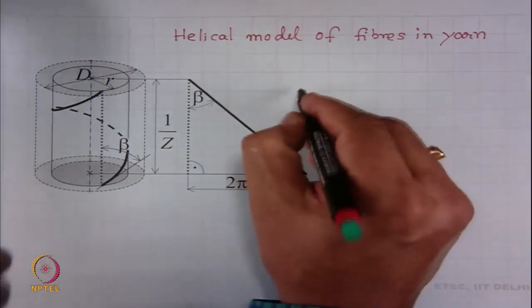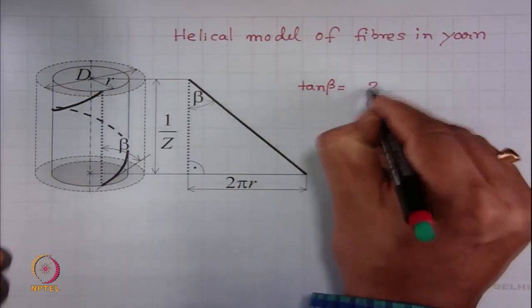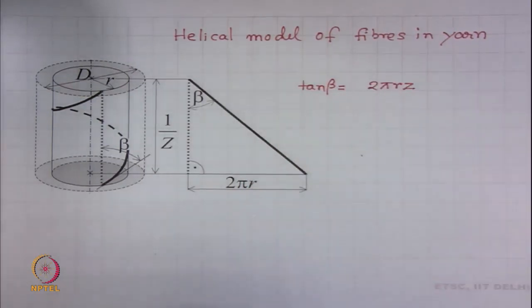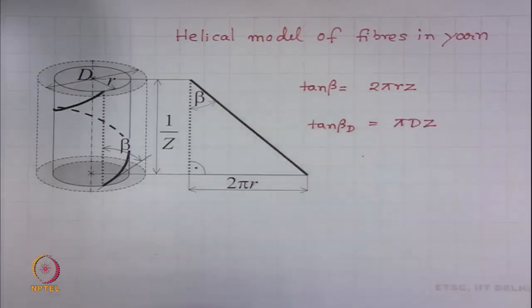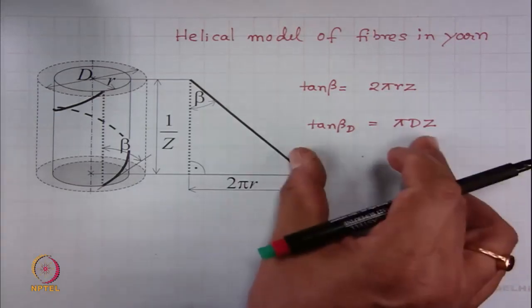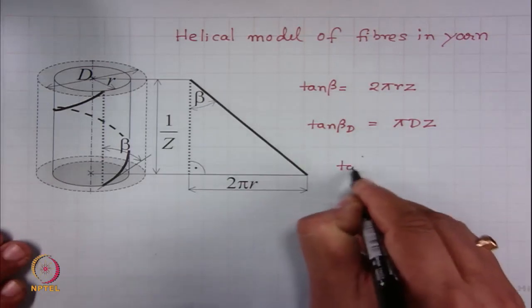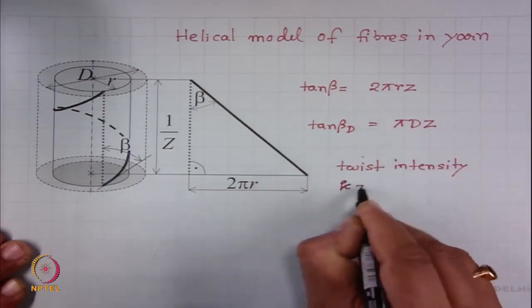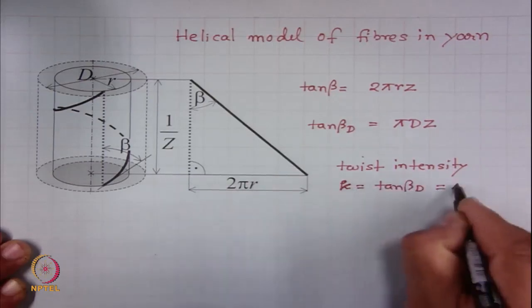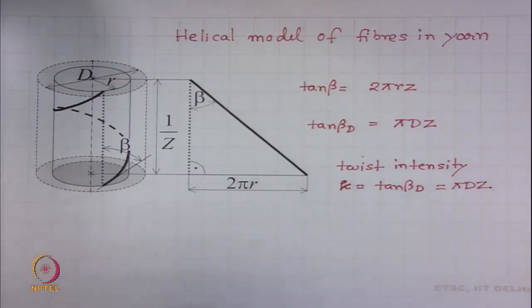Applying trigonometry, we find that tangent of beta equals 2πrz. For a fiber situated at diameter d, we write tangent of beta_d equals π·d·z. In the theory of yarn, this quantity π·d·z has a name — twist intensity — generally denoted by the symbol kappa. This is a well-known expression from the helical model of fibers in yarn, which we use in this module.